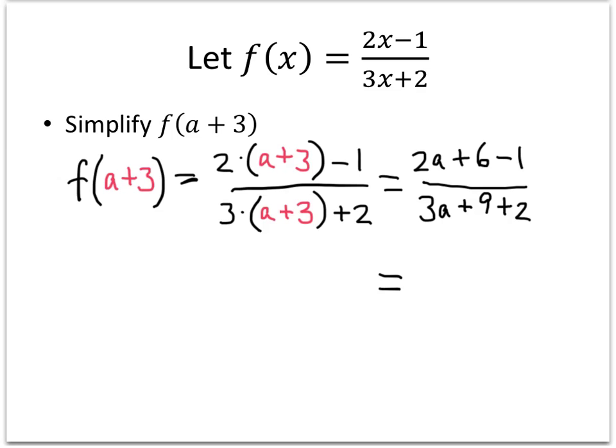Now there's not too much more simplifying we can do. On the top we're going to have 2a plus 6 minus 1 is 2a plus 5. And on the bottom, 3a plus 9 plus 2 gives us 3a plus 11. And that's as simplified as that gets. You might be tempted to try to divide out the a on the top and the a on the bottom, but we know that doesn't work because we couldn't factor an a out of everything on the top, and we couldn't factor an a out of everything on the bottom. So these a's have to stay put, and this is our final answer.